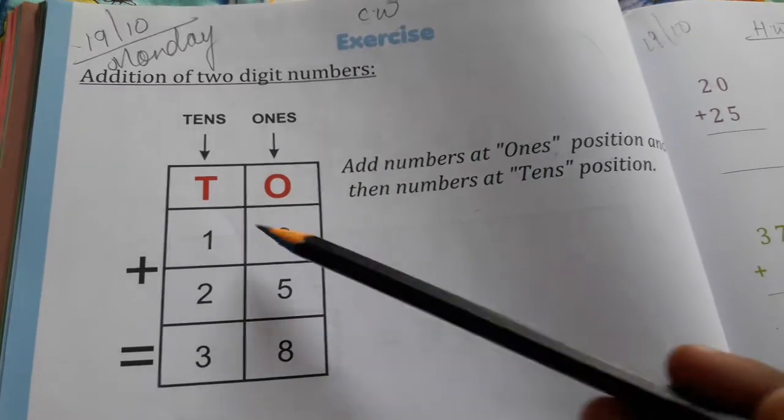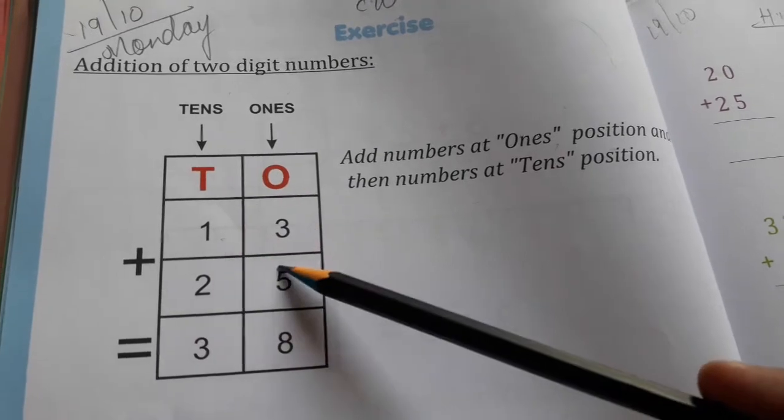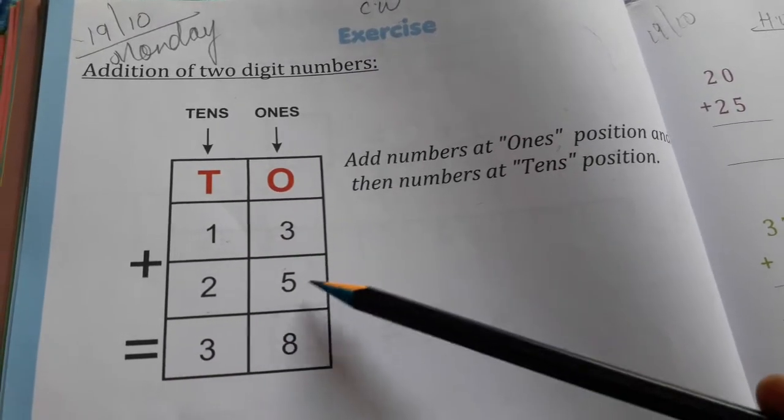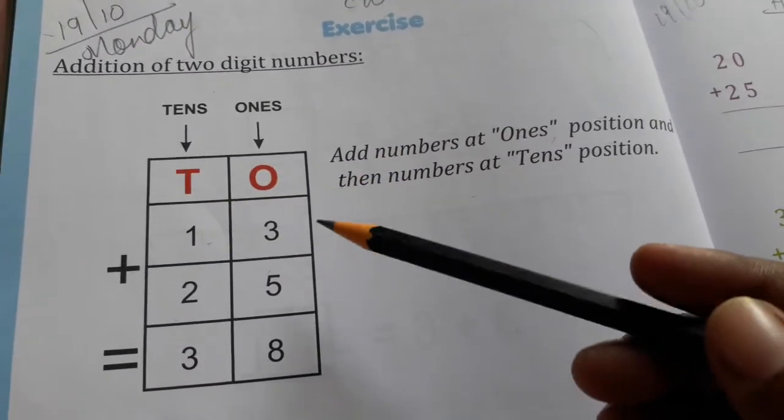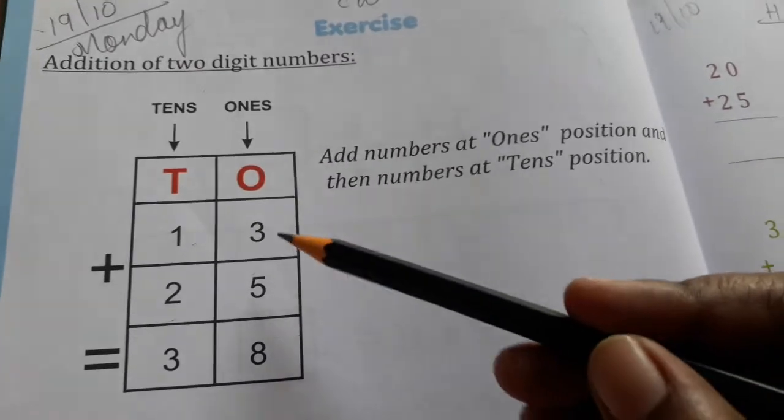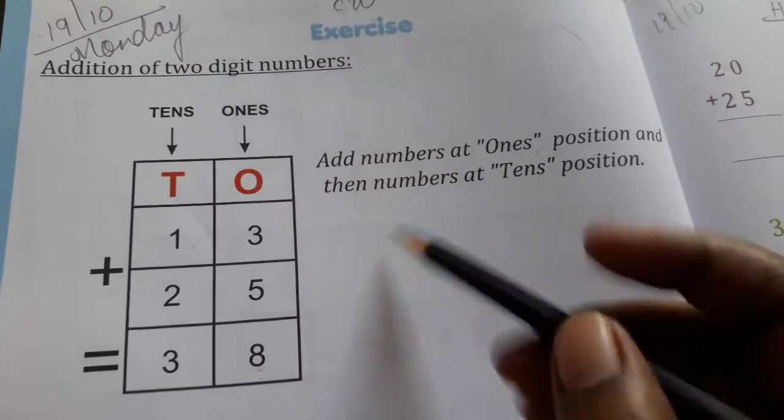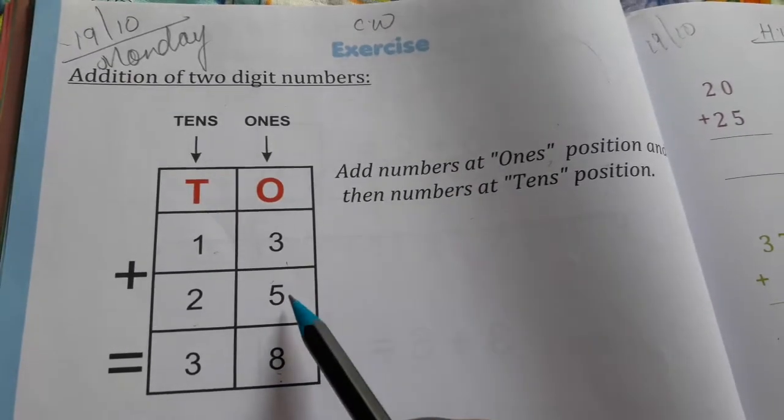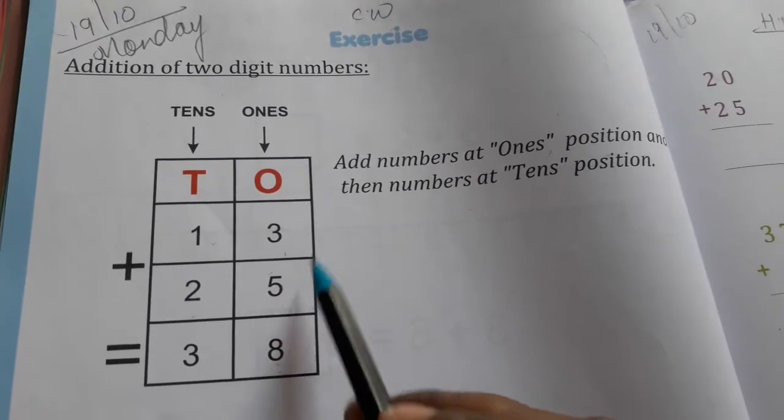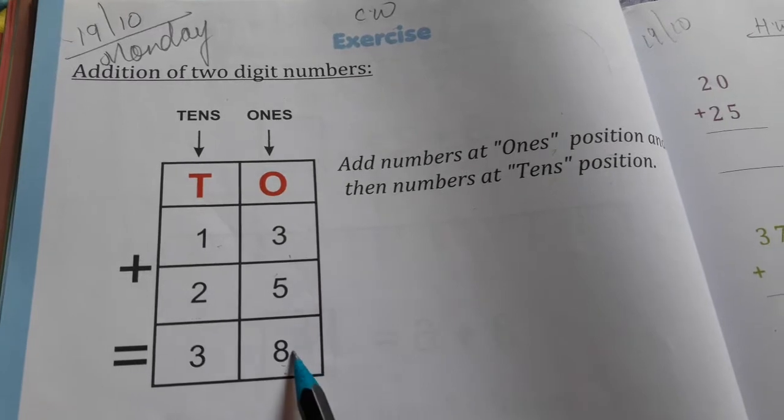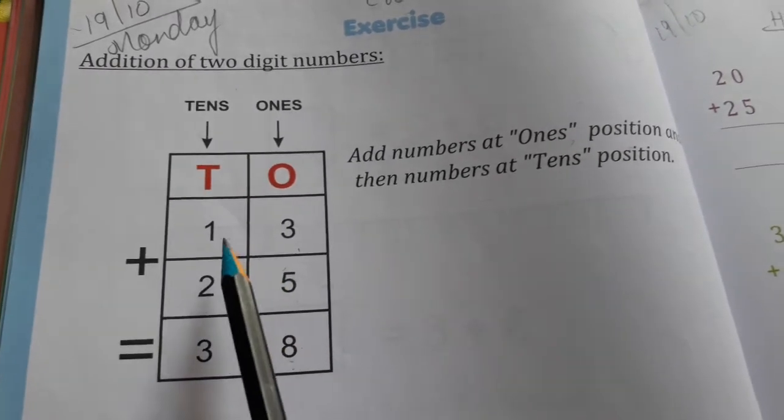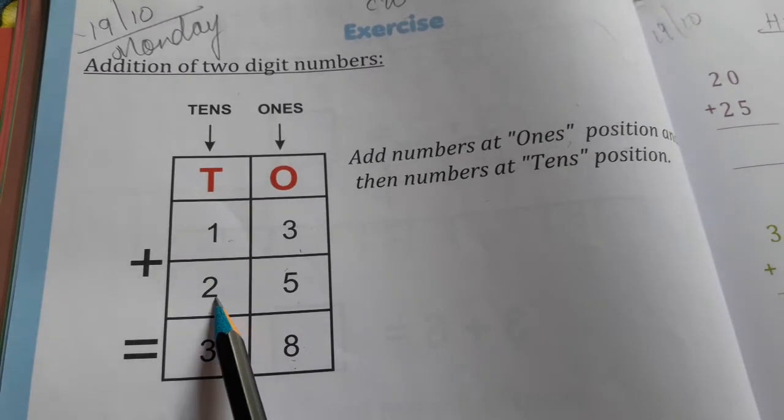First we have written here 13 and 25. First we have to do addition of numbers at ones place. Like here, 3 and here 5. So 3 plus 5 equals 8. Next, 1 plus 2 equals 3.